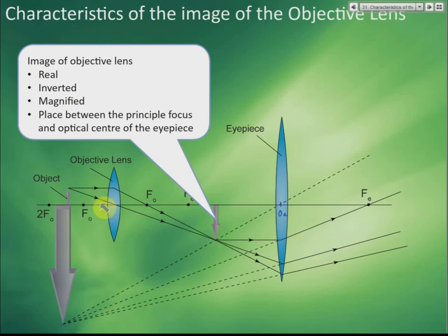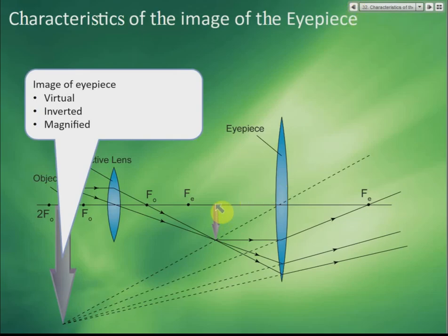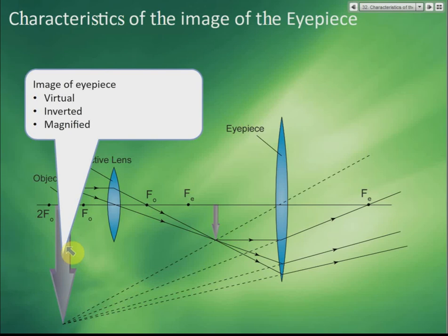You must know how to draw the ray diagram — make sure you practice because in the exam they may ask you to draw it. If you place your object here, the final image you get is virtual, inverted, and magnified. This instrument is normally used to observe very small things like bacteria. Whether the bacteria appears upright or inverted doesn't matter, so a virtual inverted magnified image is acceptable.